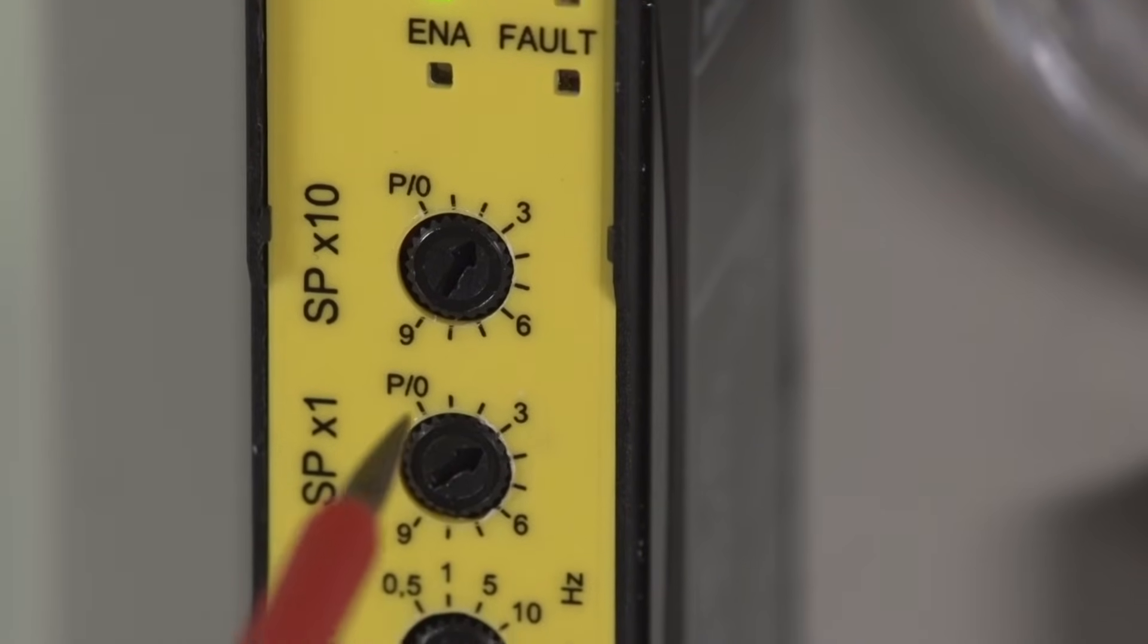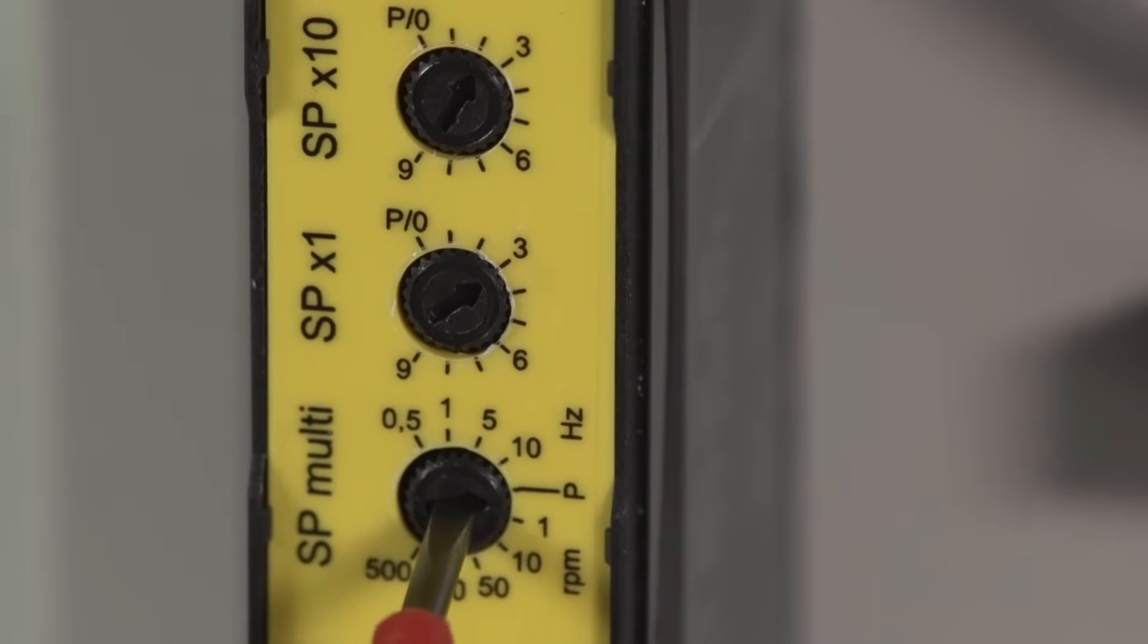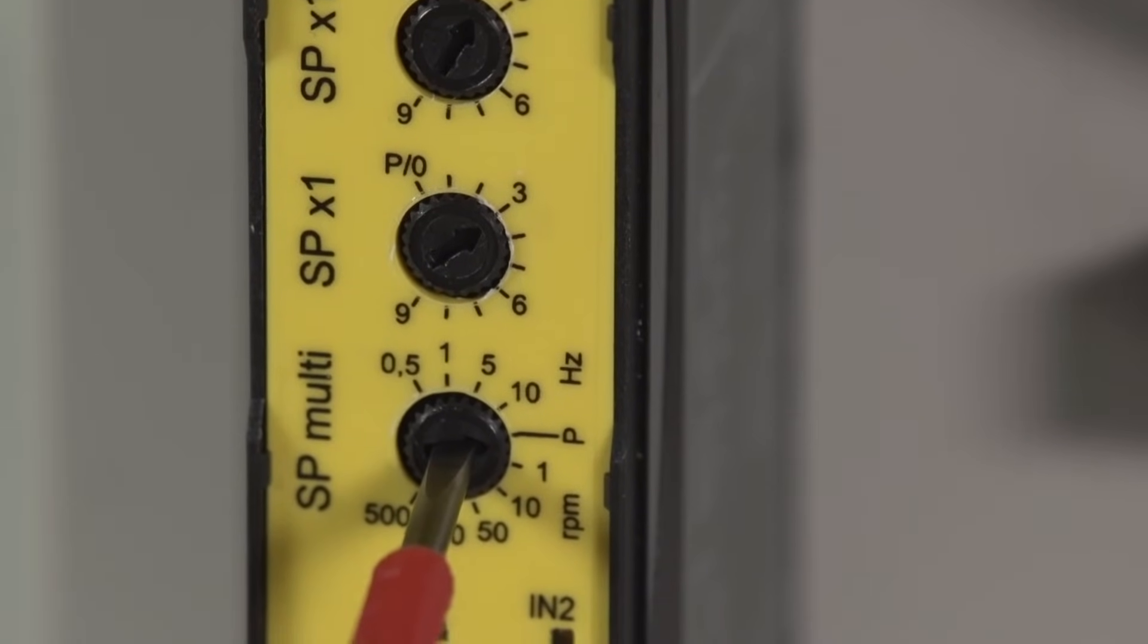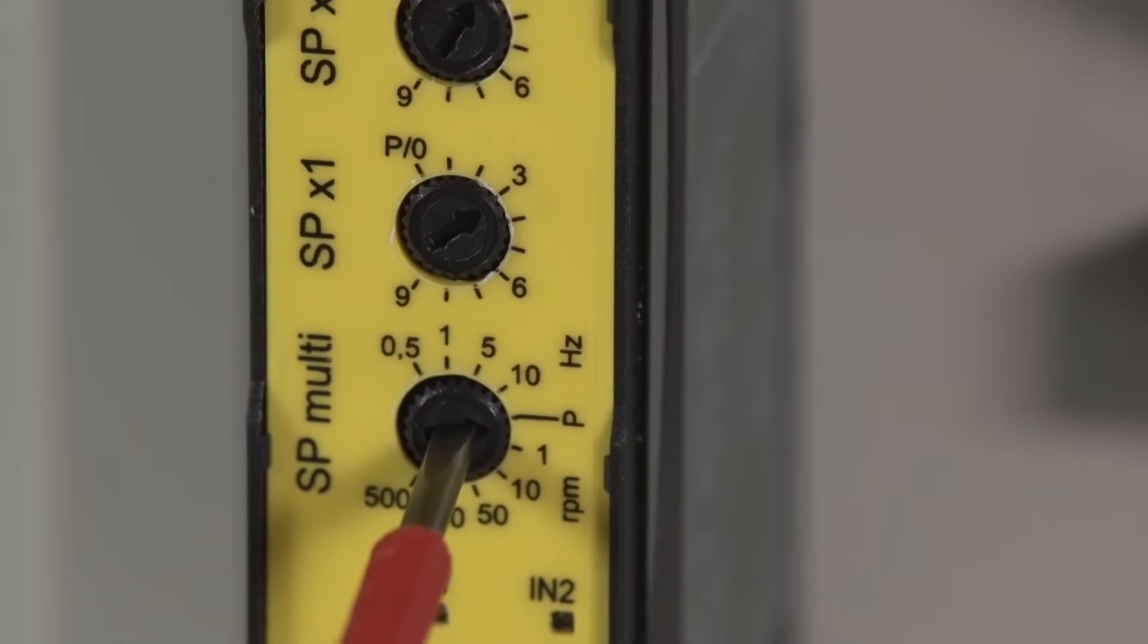With the middle switch, the numerical values from 1 to 99 can be set in increments of 1. And with the lower switch, the multiplier can be set.